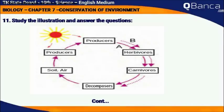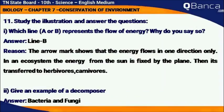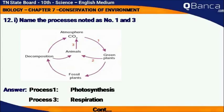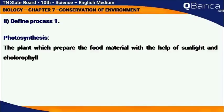Study the illustration and answer the question: Which line, A or B, represents the flow of energy? Answer: Line B, because the arrow mark shows that energy flows in one direction only. In an ecosystem, the energy from the sun is fixed by the plant, then transferred to the herbivores or carnivores. Give an example of a decomposer: Bacteria and Fungi. Name the processes noted as number 1 and 3: Process 1 is Photosynthesis, Process 3 is Respiration. Define Process 1 — Photosynthesis: the plant prepares food material with the help of sunlight and chlorophyll.